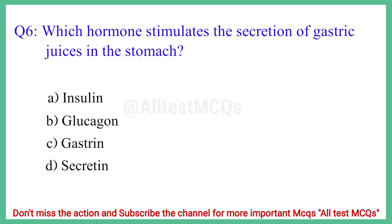Question No. 6: Which hormone stimulates the secretion of gastric juices in the stomach? The correct answer is option C: Gastrin.